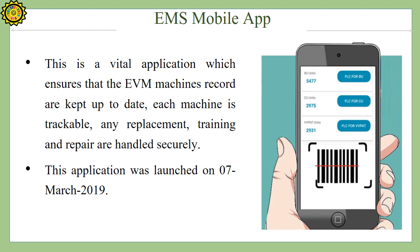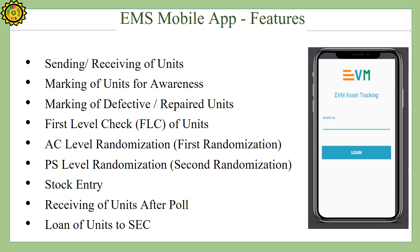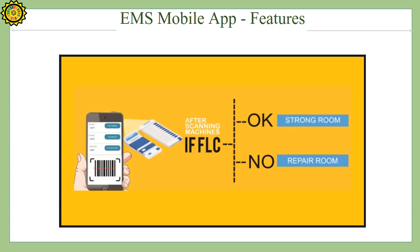This application was launched on 7th March 2019. Features of EMS Mobile App include: sending or receiving of units, marking of units for awareness and training purposes, marking of de facto or repaired units, FLC of units, randomization work, stock entry, receiving of units after the poll, and loan of units to the state election commission. Through this app, we can mark whether the machine is FLC OK or FLC Not OK — FLC OK machines go to the strong room and FLC Not OK machines go to the repair room.